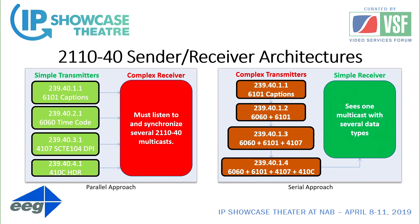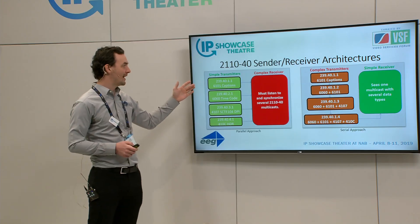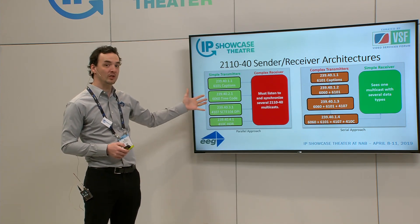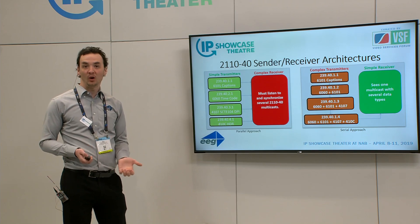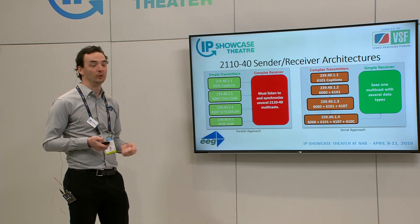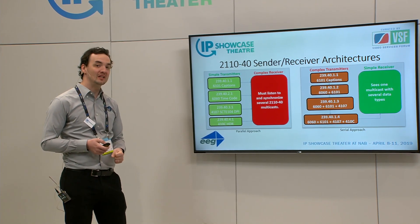Two different architectures are worth discussing for ancillary multicasts. There's no requirement to put all ancillary data in a single multicast stream. The same questions arise with audio grouping. Do we have expert devices that make different packets — captions, timecodes, SCTE-104 triggers, HDR information — each generating their own multicast, independently receivable at other points in the stream? That has a lot of advantages: no single device needs to be the expert in all standards, and you can route them independently.